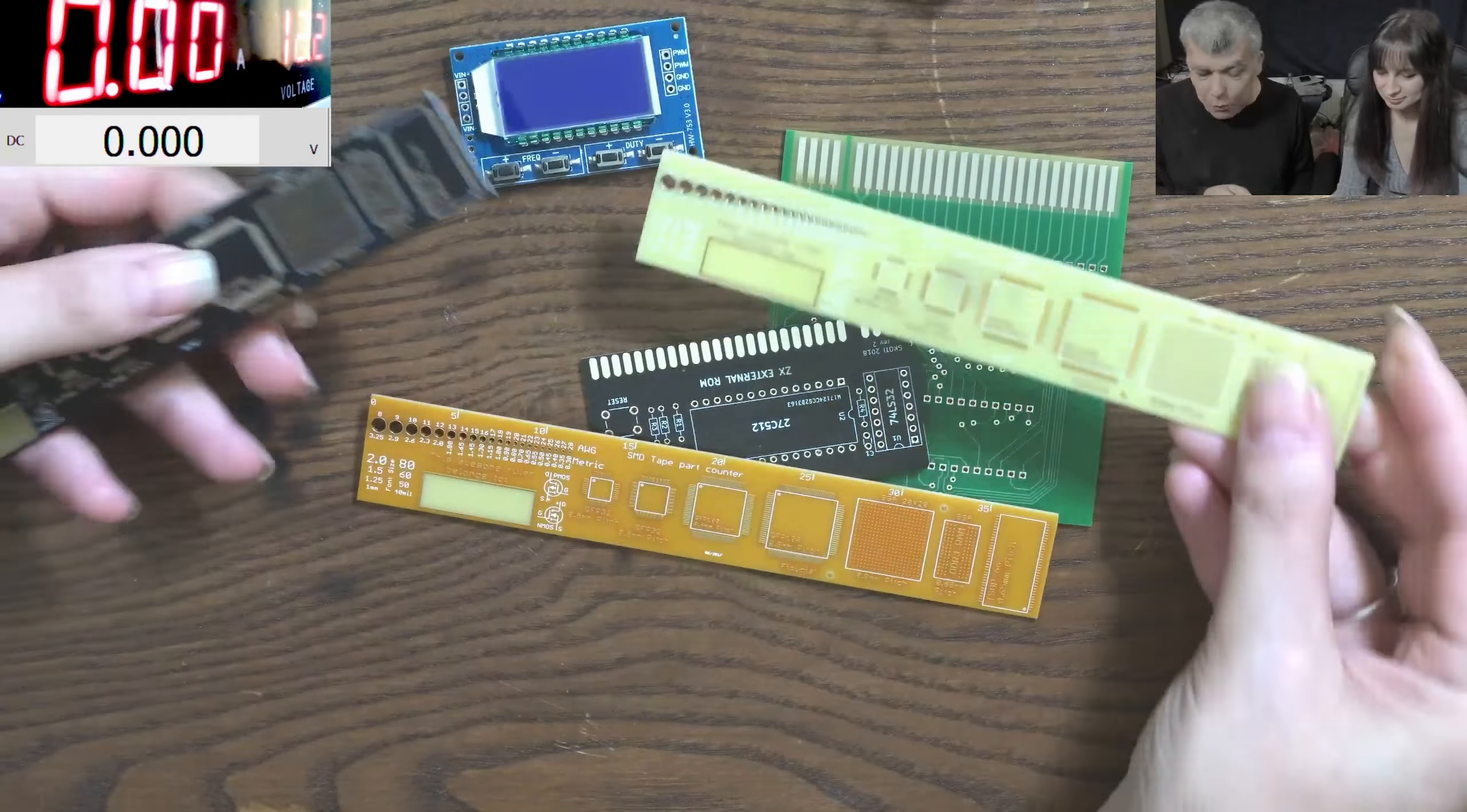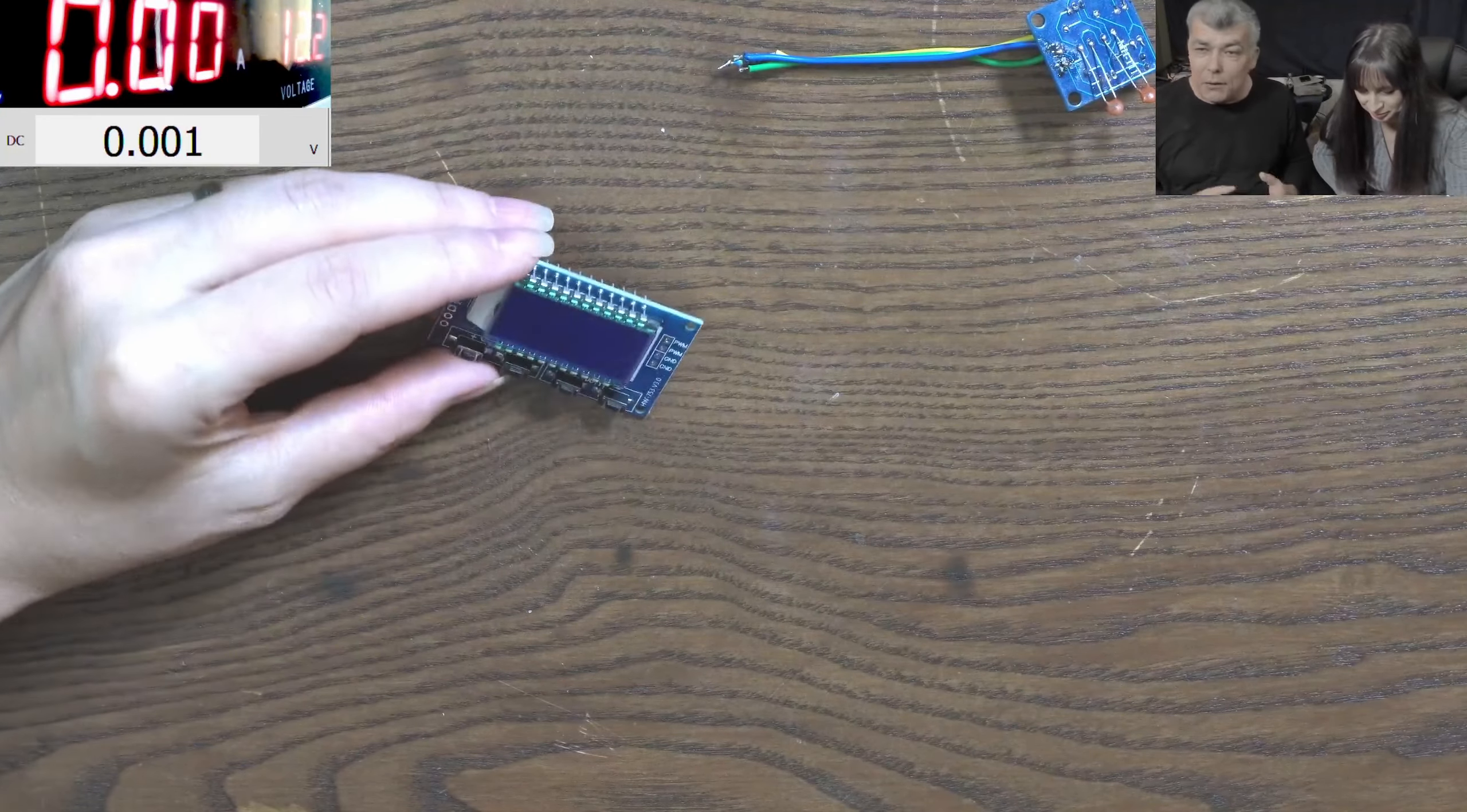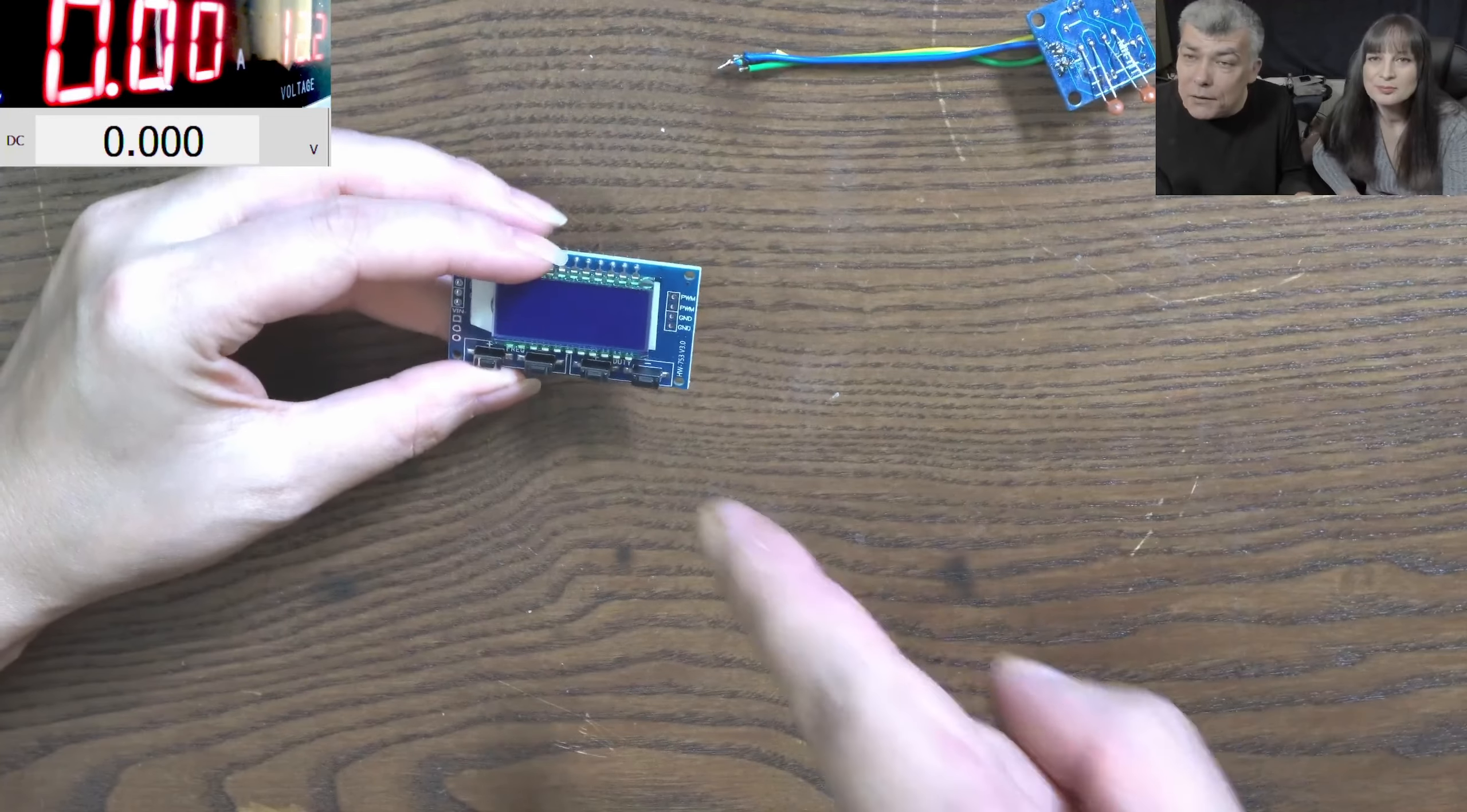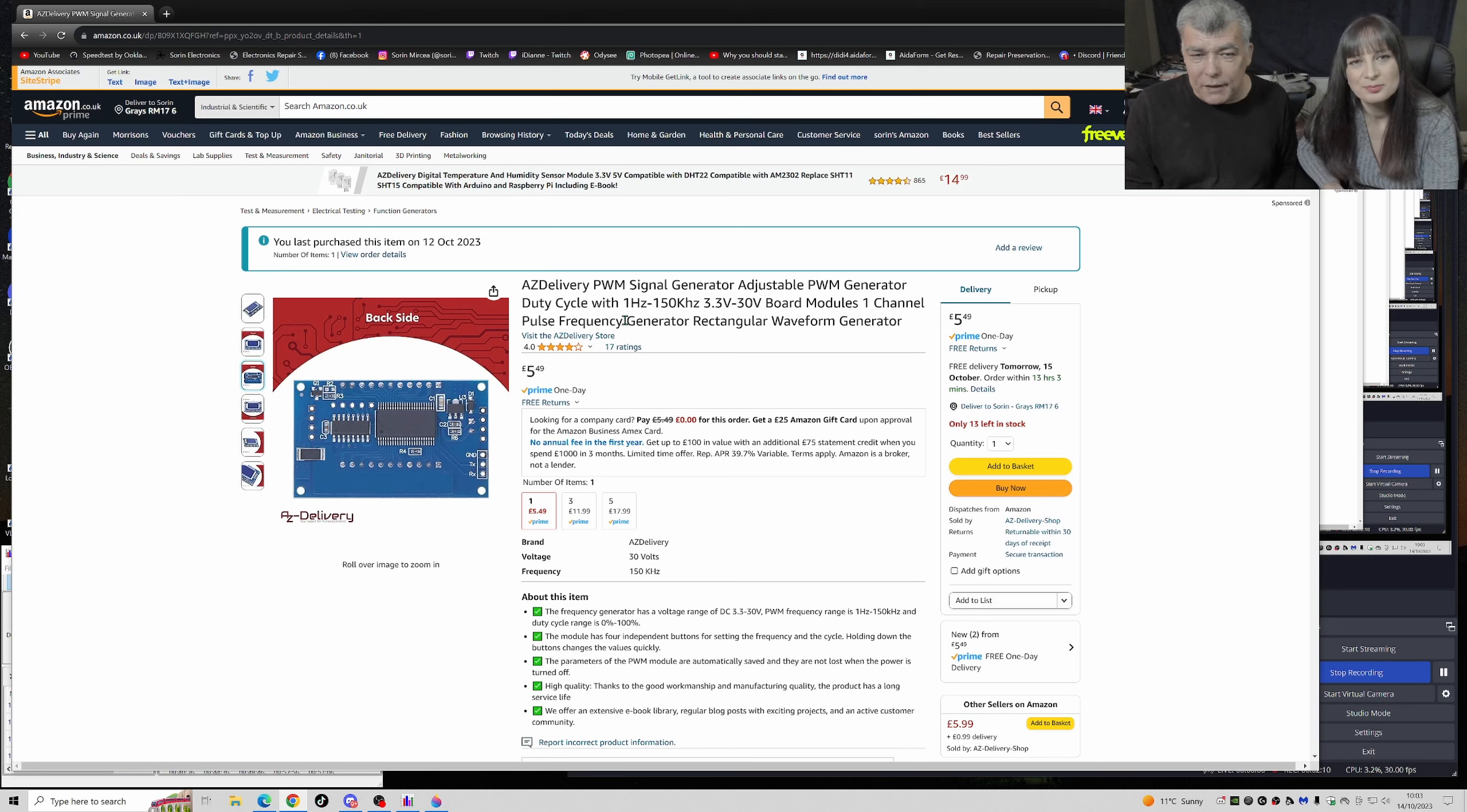Now let's go back to our PWM generator, a digital one, so we can control more precisely the frequency and the duty cycle. I will leave a link in the description with this PWM generator which is about five pounds.